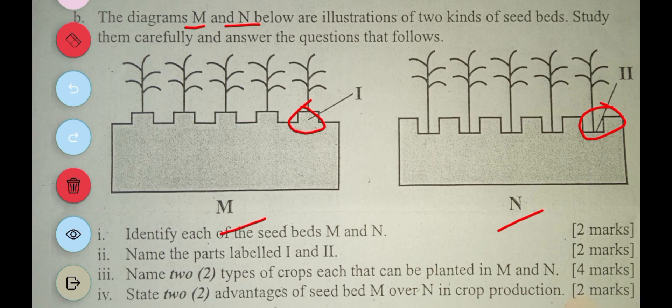The next question says: state two advantages of seed bed M over N in crop production. In other words, importance of raised bed over sunken bed. So with raised bed, there's proper drainage or there's better drainage, which is able to drain easily.